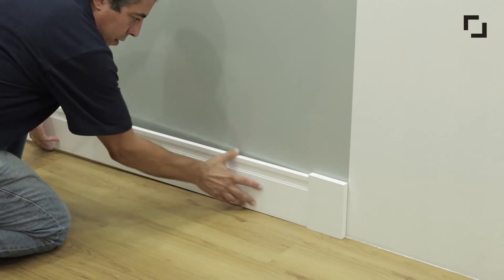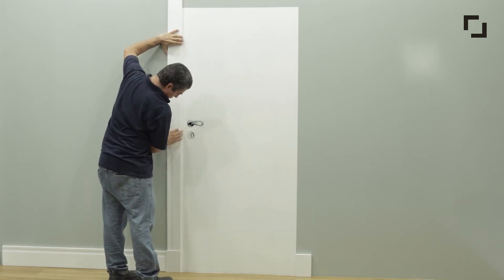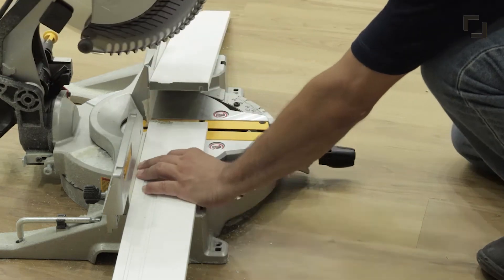Next, fixate the baseboard on the wall. Then fit the casing and make a top cut mark. Position the mark on the saw and make the cut.